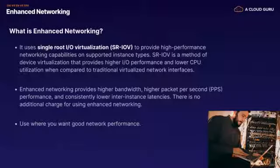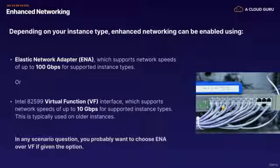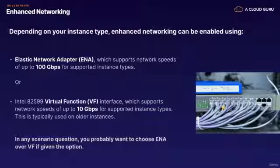You'll use enhanced networking where you need good network performance. Depending on your instance type, it can be enabled using two methods. The Elastic Network Adapter, or ENA — which is where the term ENA comes from — supports network speeds of up to 100 gigabits per second for supported instance types. Or you can use the Intel 82599 Virtual Function, or VF, interface, which supports up to 10 gigabits per second and is typically used on older instances. In any scenario question, you probably want to choose ENA over VF if given the option.